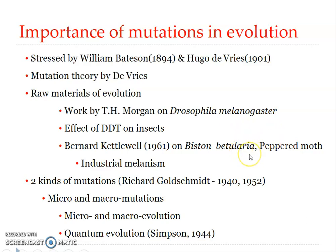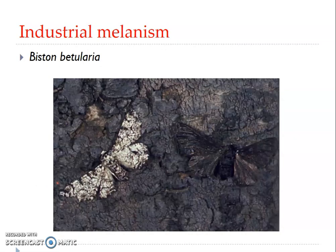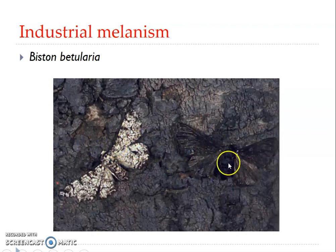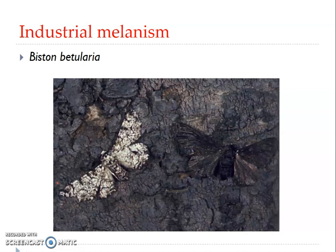Another example of differential survival is given by the darkly pigmented peppered moth, Biston betularia — a classic example of industrial melanism. It was studied and published by Bernard Kettlewell in 1961. The moth appears in two variant forms: one completely black or dark-colored, and the typical gray-colored form. This is a typical example of spontaneous mutations referred to as industrial melanism.